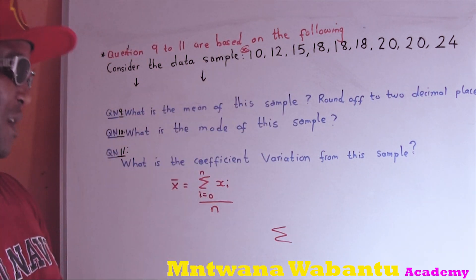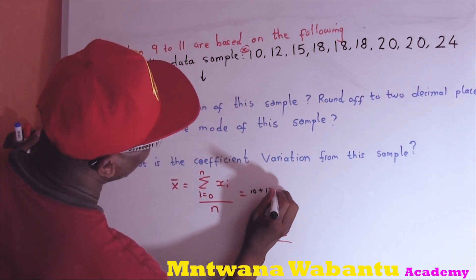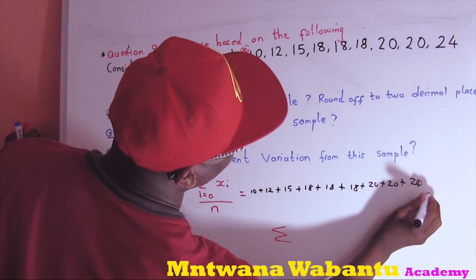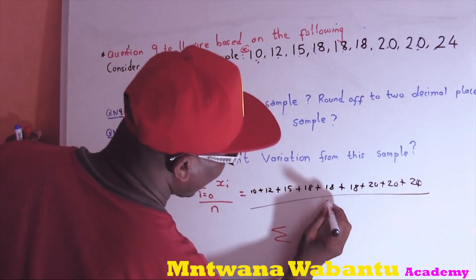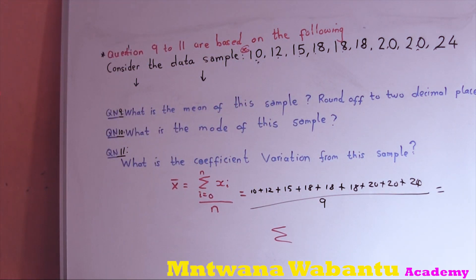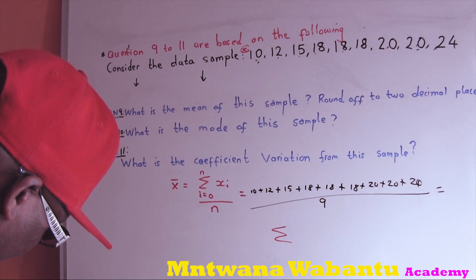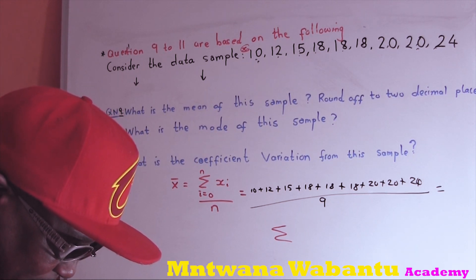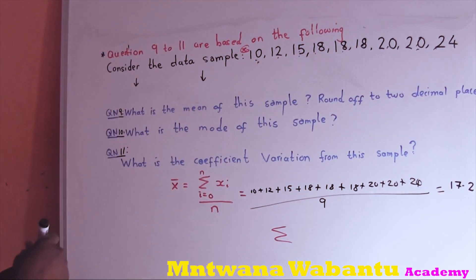So the mean is: 10 + 12 + 15 + 18 + 18 + 18 + 20 + 24 + 30, divided by 9 — there are nine values. Add those all together in a calculator and this is going to give us a mean of 17.22. So the mean equals 17.22.